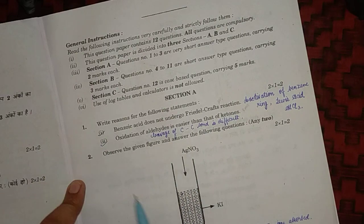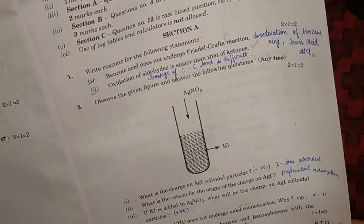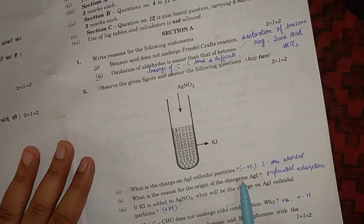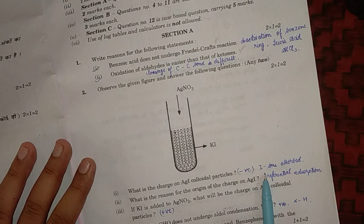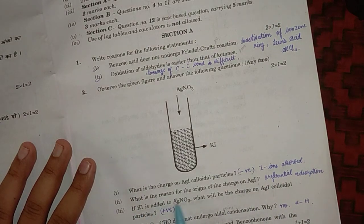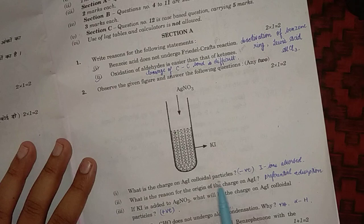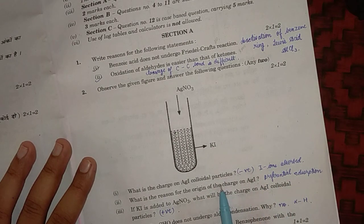Moving to question second: observe the given figure and answer the following question. What is the charge on AgI colloidal particles? The charge will be negative as I minus ions are absorbed. Second part: what is the reason for the origin of the charge on AgI? The main reason is preferential adsorption.